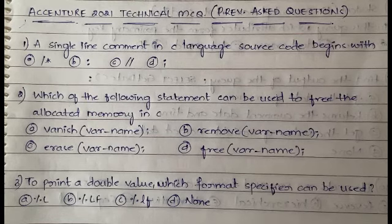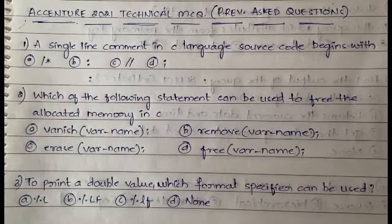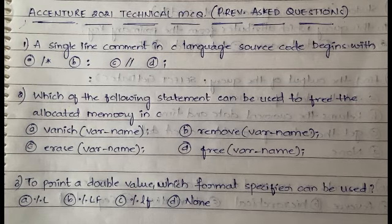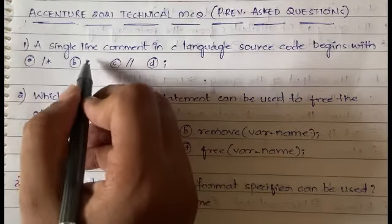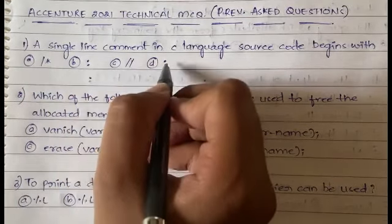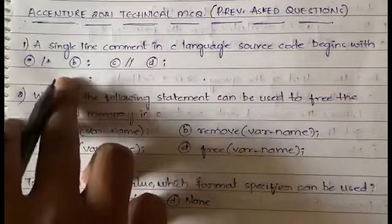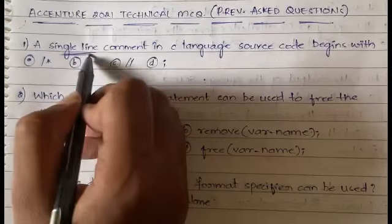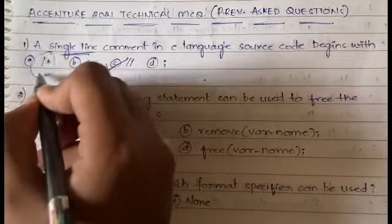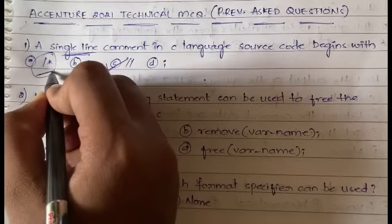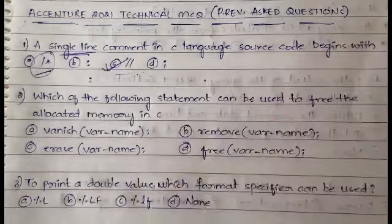First question: A single line comment in C language source code begins with what? Here are four options: slash star, colon, double slash, and semicolon. The answer is double slash, option C. We use slash star for multi-line comments, but for single line comments we use double slash.